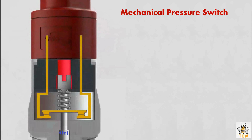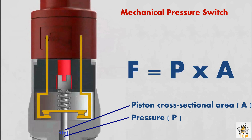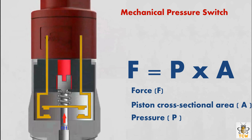When the piston on the pressure switch receives pressure from the outside — where the pressure is symbolized by the letter P — the pressure P acts on the piston with a cross-sectional area of A. According to the law of physics, there will be a force F where F equals pressure P times cross-sectional area A. This force F compresses the piston held by the spring so the piston lifts up. The raised piston separates the contact surfaces of the switch and breaks the electrical circuit.